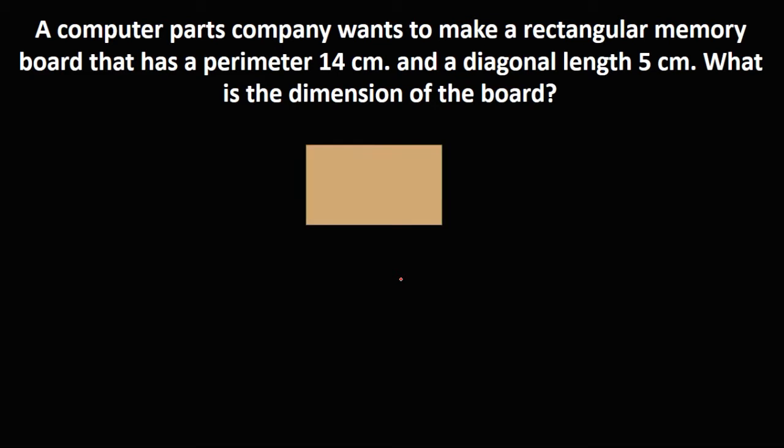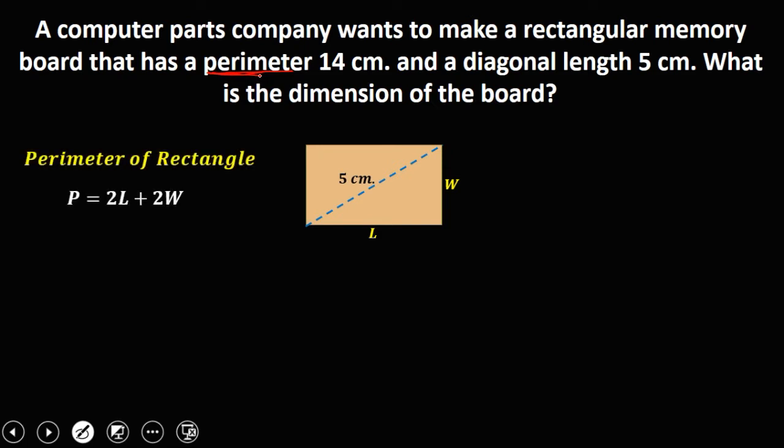If this is the rectangular board, we have this length and the width and a diagonal length of 5 cm. Since we have this given perimeter and the formula for the perimeter of a rectangle, that's 2L plus 2W or 2 length plus 2 width. Since perimeter is 14, substitute this 14. So 14 equals 2L plus 2W.